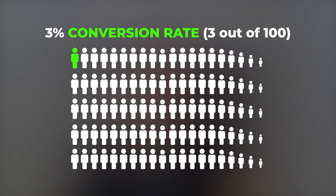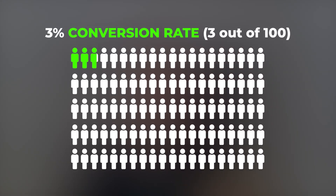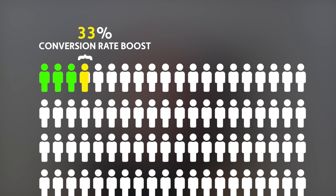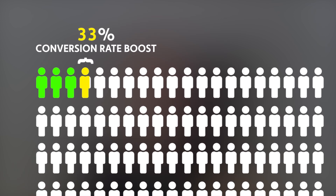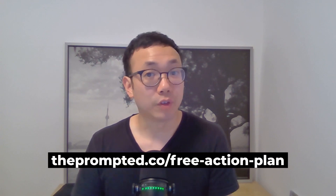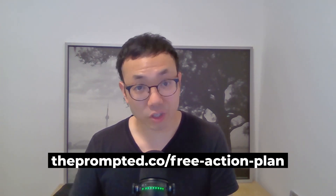And that could mean a 33% boost in sales. For example, if you're getting a 3% conversion rate — three sales per 100 visitors — by adding just one more sale per 100 visitors, that would mean a 33% increase in the actual conversion rate. So if you're looking for more actionable advice on how to increase conversion rates on your store, we're offering a free personalized action plan. You just need to fill out a quick 30-second form at prompted.co/free-action-plan.